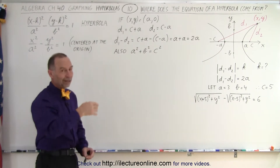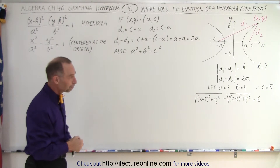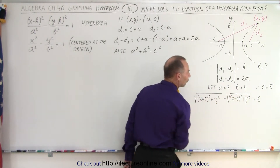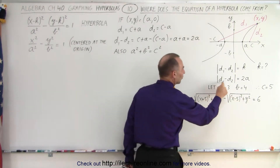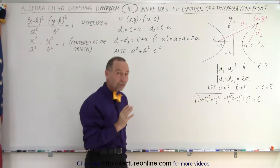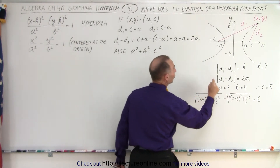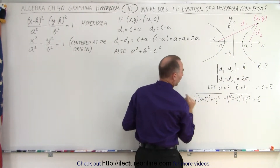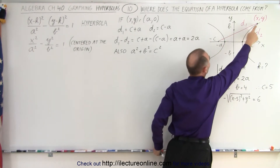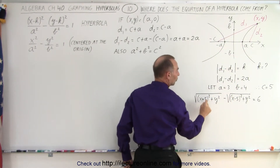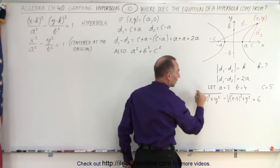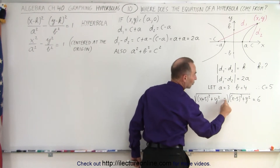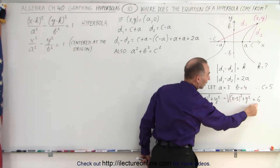Now let's assume A equals 3 and B equals 4. What would the difference of D1 and D2 be? Using the distance formula, we take the distance in the x direction, which would be x plus 5, and the distance in the y direction, which is y. We square those two, add them together, and take the square root — that's D1. We do the same for D2, subtract the two, and that equals 2A, which in this case is equal to 6.